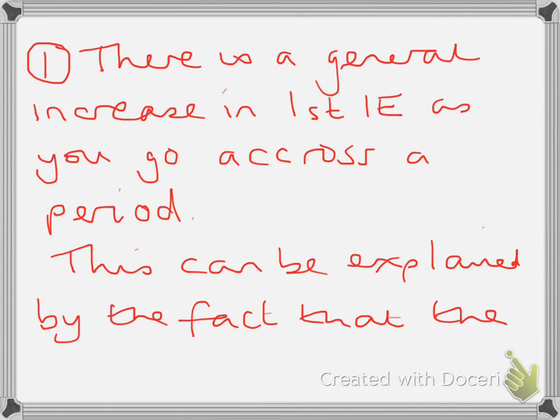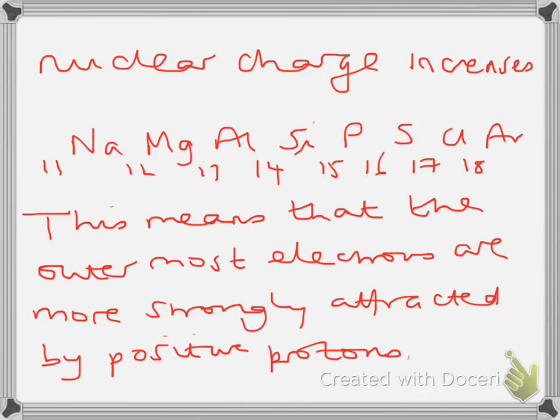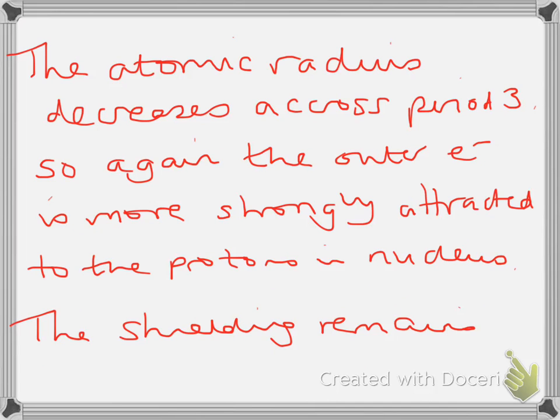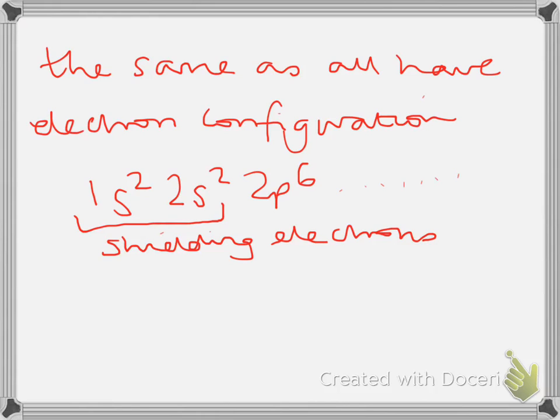The first one is that there is a general increase in first ionization energies as you go across a period. This can be explained by the fact that the nuclear charge increases. So if we just look at sodium to argon underneath this I put the number of protons so sodium's got 11 protons and argon's got 18 protons. This means that the outermost electrons are more strongly attracted by the positive protons in argon. We also note that the atomic radius decreases across period 3. So again the outer electron is more strongly attracted to the protons in the nucleus. As it's period 3 the shielding remains the same so all of them will have an electronic configuration with shielding electrons 1s2, 2s2.